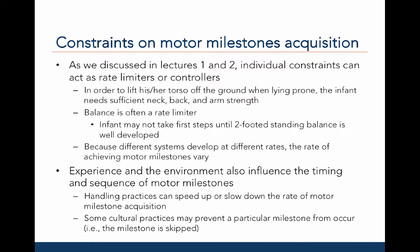As we discussed in lectures 1 and 2, individual constraints can act as rate limiters or controllers in the acquisition of different motor milestones. For example, in order to lift his or her torso off the ground when lying prone, the infant needs sufficient neck, back, and arm strength. Balance is often a rate limiter in the acquisition of motor milestones.